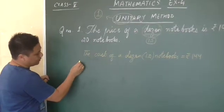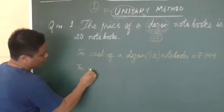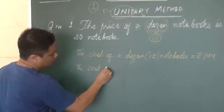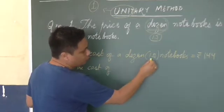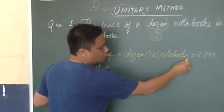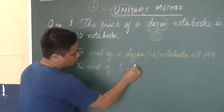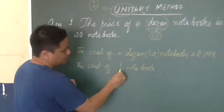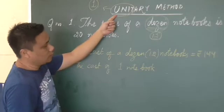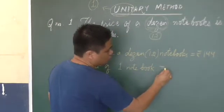Then the second line is, therefore, the cost of 12 notebooks were given. Now you have to find out the cost of one notebook. This is what unitary method is. You have to find out one. One notebook is equal to, simply,